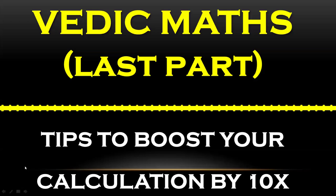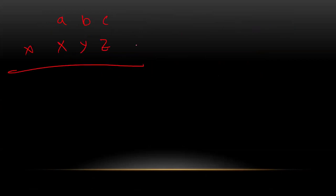This is the last part of Vedic maths to boost your calculation speed. In the last segment we learned multiplication of three digits. There is a 1-2-1-2-1 rule: suppose A B C multiplied by X Y Z — first multiply the last digits, then cross multiply two digits, then cross multiply three digits, then cross multiply the last two digits, then multiply the last digits.